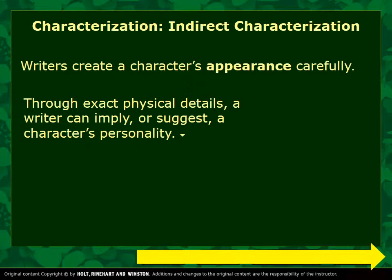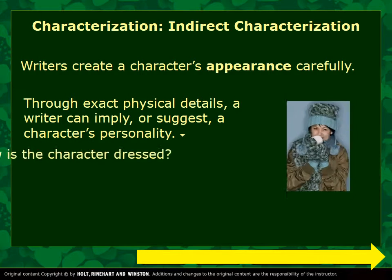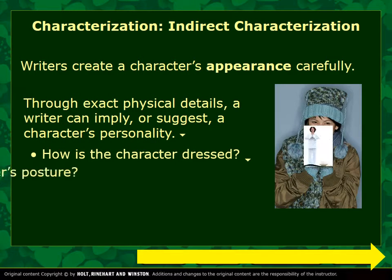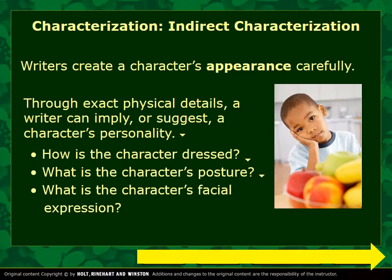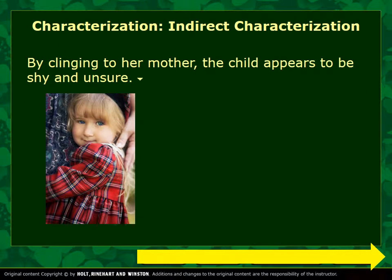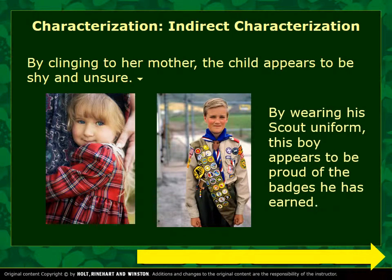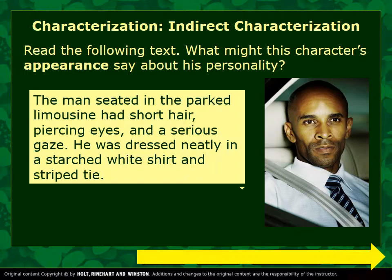Writers create a character's appearance carefully. Through exact physical details, a writer can imply or suggest a character's personality. How is the character dressed? What is the character's posture? What is the character's facial expression? All of these start to build personality. By clinging to her mother, the child appears to be shy and unsure. By wearing his scout uniform, this boy appears to be proud of the badges he has earned. So read the following text — what might this character's appearance say about his personality?